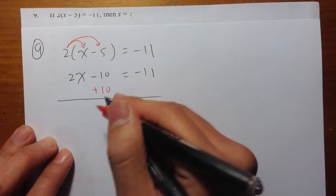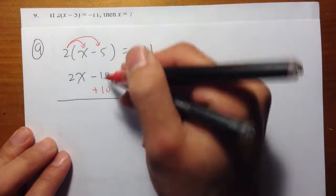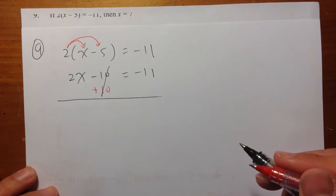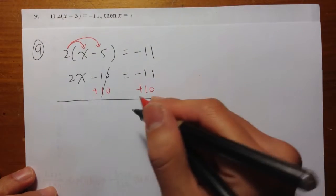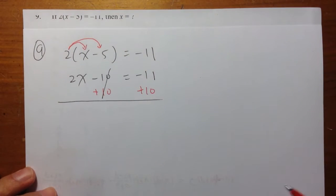Because negative 10 plus 10, or minus 10 and then plus 10, they cancel out to be zero. And the key here is that we're going to do the same on the right-hand side. We're going to add the 10 to the negative 11 as well.